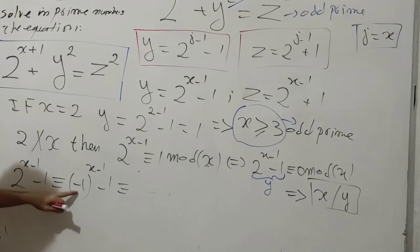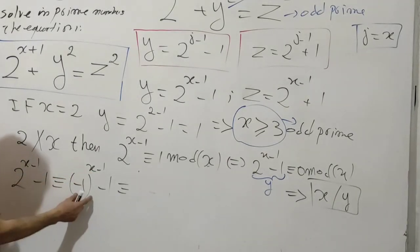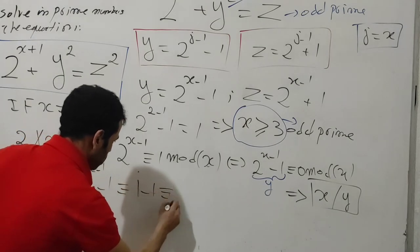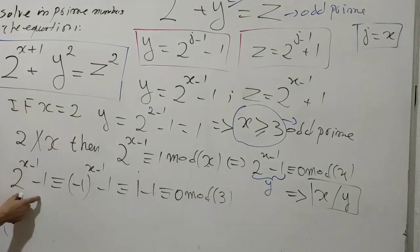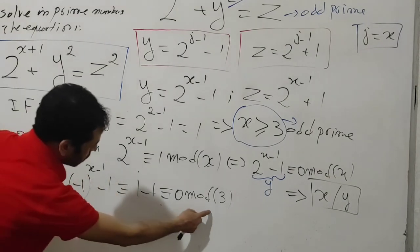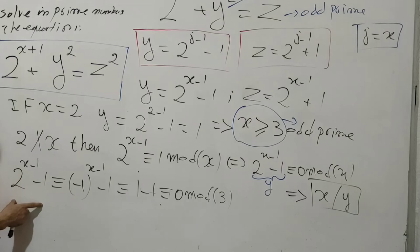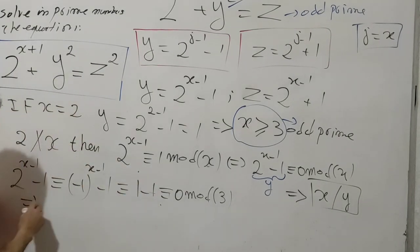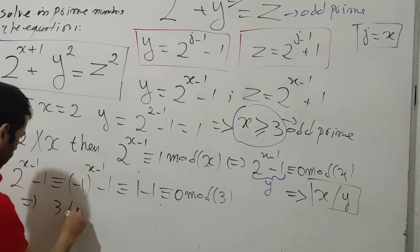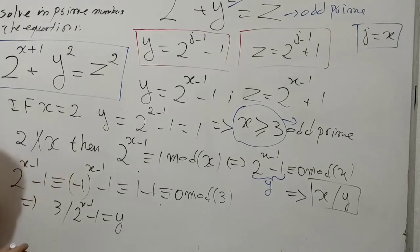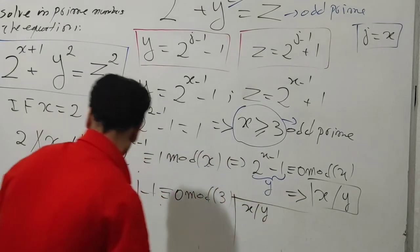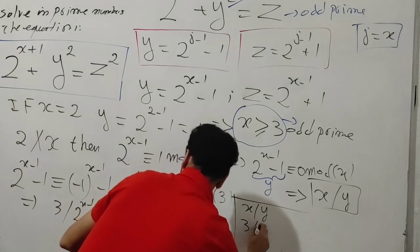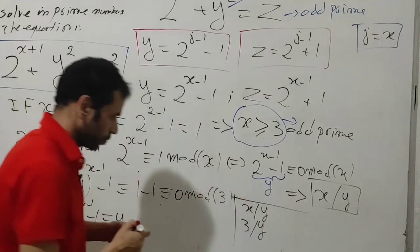On the other side, 2^(x-1) - 1 ≡ (-1)^(x-1) - 1 (mod 3). Since x is odd, x - 1 is even, so (-1)^(x-1) = 1, giving 1 - 1 = 0 (mod 3). This means 3 divides 2^(x-1) - 1, which equals y. So we have x divides y and 3 divides y.